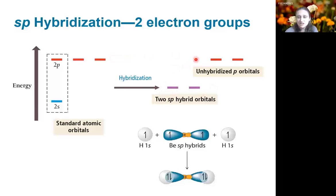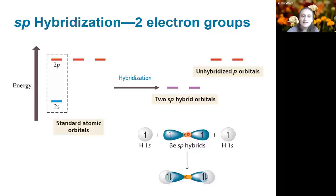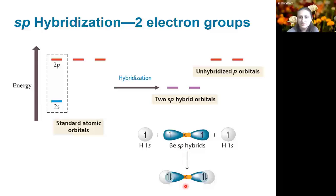Our unhybridized p orbitals do not change their energy. We can see how this works in the example of beryllium hydride. Beryllium has sp hybridization — it has one orbital pointing in each direction that can overlap with a hydrogen orbital, forming the beryllium-hydrogen bonds. The leftover p orbitals are still on the beryllium atom, perpendicular to this bond, and in this example they are just empty.